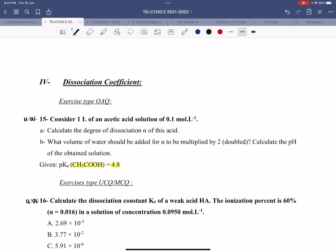Calculate the degree of dissociation of this acid, which is basically alpha. So calculate alpha of this weak acid at 25 degrees Celsius.